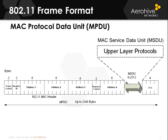The duration value can be anywhere from 0 to 32,768 microseconds. The address fields one through four include the transmitter MAC address and the receiver MAC address as the wireless addresses, and also the actual source and destination addresses which could be wired or wireless. The source MAC address is the address of the device that actually began the communication. The transmitter address is the address that put the frame in the air. The receiver address is the address of the device that pulled the frame from the air. And the destination address is the address where the frame was ultimately supposed to go.